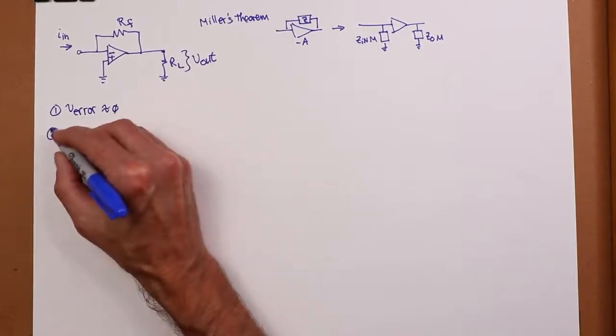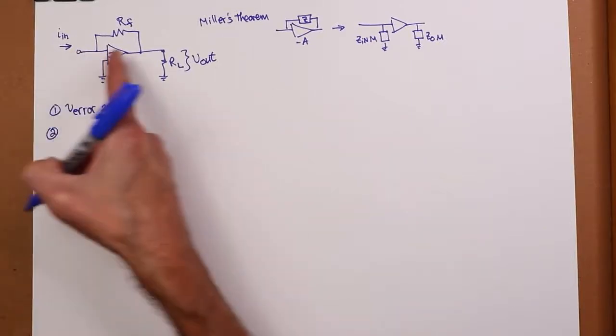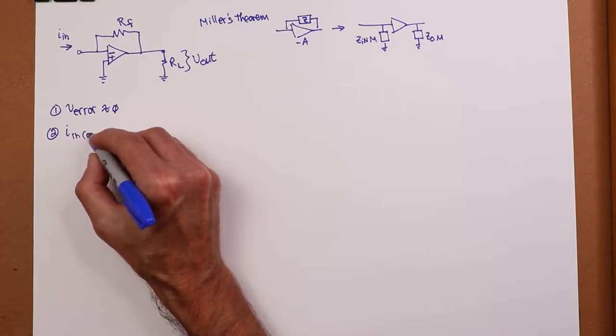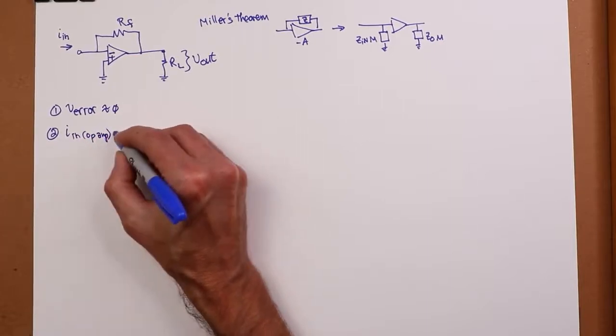Number two, input current into the op amp, not the input current of the circuit, but the input current into the op amp, also zero.